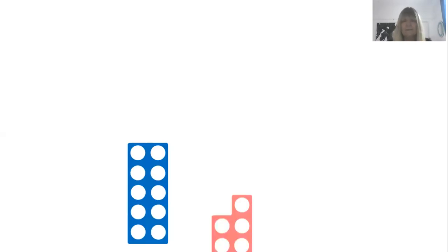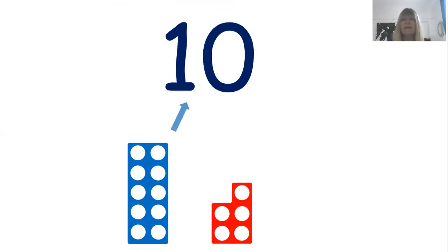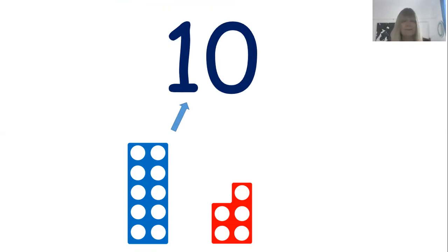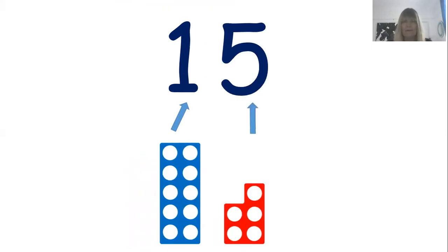We are going to start with some numicon tiles — a ten tile and a five tile. Have a think: what number do you think you are looking at altogether? If you know it's 15, you'll be absolutely right. The 10 we write like that, but we've got the five ones, so we take away that zero and add the five.